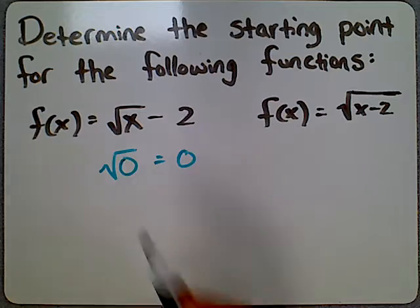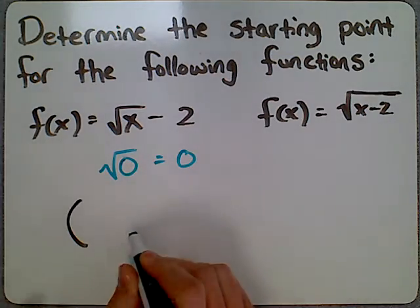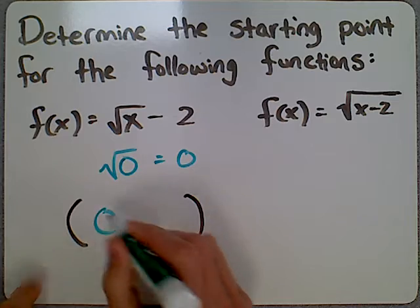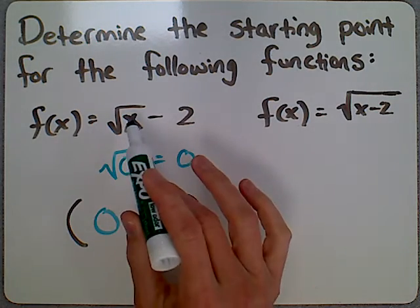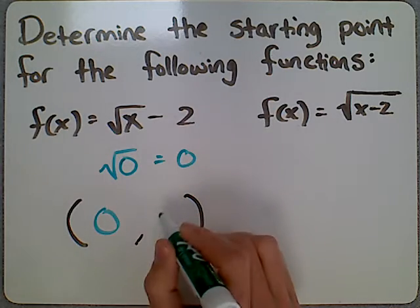So if we're looking to find the starting point, we would plug in 0 first, and then we just run a quick calculation. The square root of 0 is 0, and then 0 minus 2 would be negative 2.